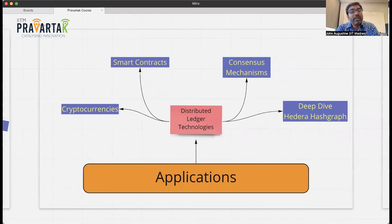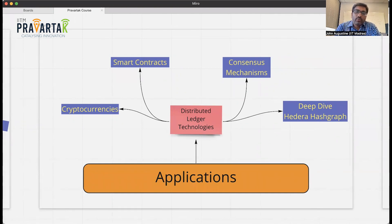Module three will cover the first application: distributed ledger technologies, with the most classic example being cryptocurrencies. Nowadays, the most prominent application is smart contracts, and we'll look into how smart contracts can be built. We'll do a deep dive on the Hedera Hashgraph, though the ideas extend to other systems as well. We'll focus on understanding how the consensus mechanism works in these distributed ledgers.